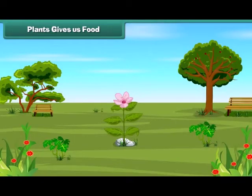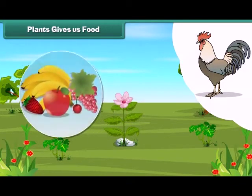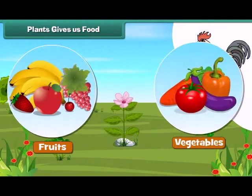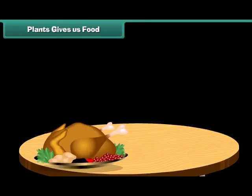We get food from plants and animals. Plants give us fruits and vegetables — they are good for us. Animals give us meat, eggs, and milk.